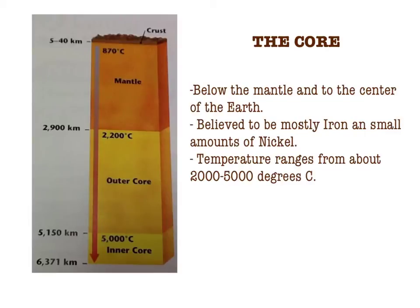The outer core is a layer of molten metal that surrounds the inner core. In spite of huge pressure, the outer core behaves like a thick liquid, and the inner core is a dense ball of solid metal.